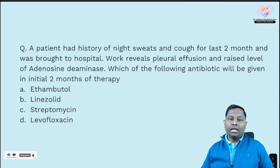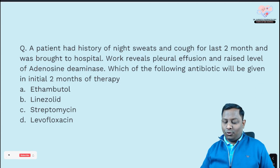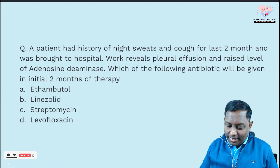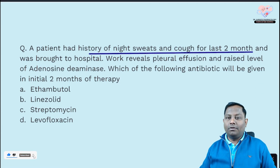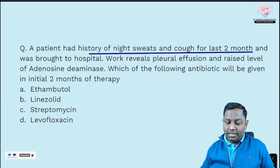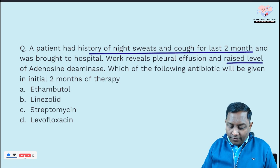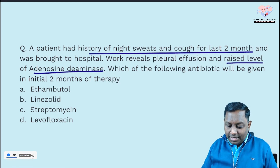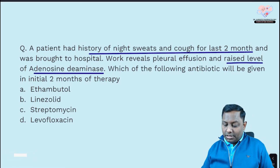The very first question: a patient has a history of night sweats and cough for two months. Night sweats and cough — directly think about TB. Look at the other findings too: pleural effusion, and a raised level of adenosine deaminase, which further confirms the diagnosis of tuberculosis.